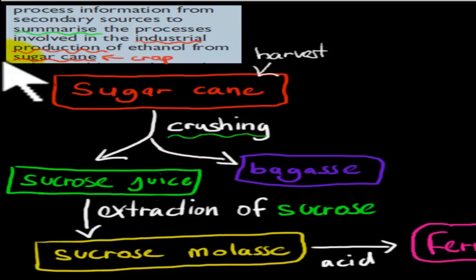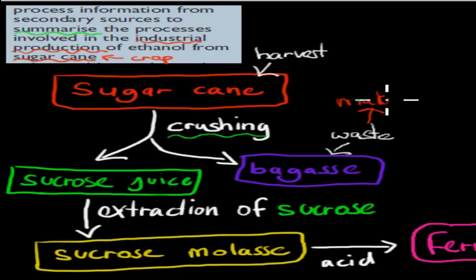We get sucrose juice, this is a liquid. And we get this bagasse which is a waste product. We don't really need it but we get it from the production of sugarcane. And this we can use to make heat. We can burn it and that can be used in other things. But this generally is a waste product. The main reason why we crush sugarcane is to make this sucrose juice.